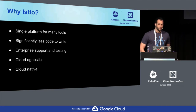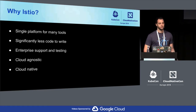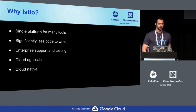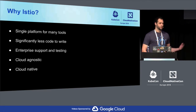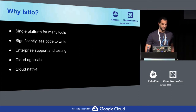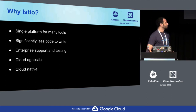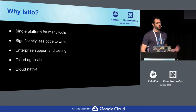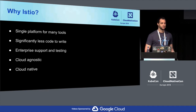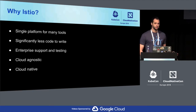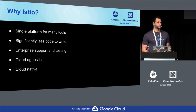Why did we land on Istio? The big thing is that it's a single platform for many tools. It integrates with a lot of things and takes care of a lot for us. It was significantly less code for us to write and document, and there's really good documentation out there already. Being part of IBM, enterprise support and testing of Istio was also big — they're backed by IBM, Google, and Lyft. There are teams of people already performance testing and regression testing it, so we don't have to.